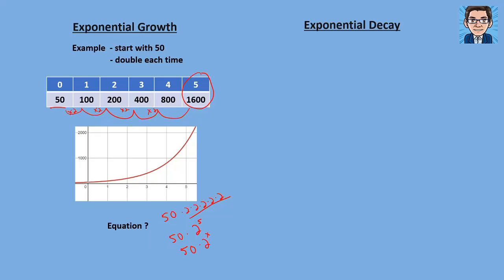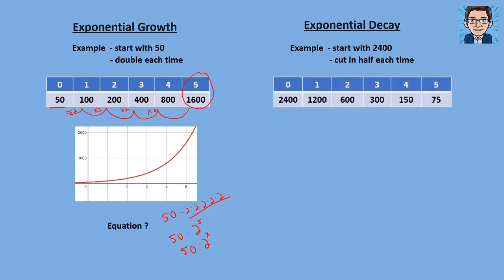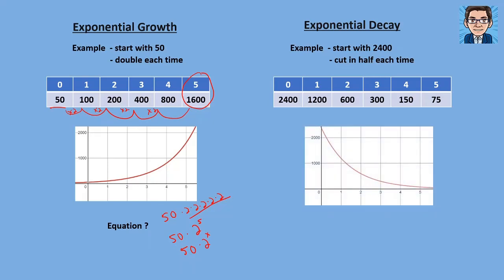Now let's take a look at exponential decay. An example of exponential decay is we're starting with 2,400, but instead of doubling, we're cutting it in half each time. The data would look like this: we go from 2,400 to 1,200 to 600 to 300 and keep cutting it in half. The graph would start up at 2,400, decrease more in the beginning and less and less as we go on, getting closer and closer to zero but never hitting zero.